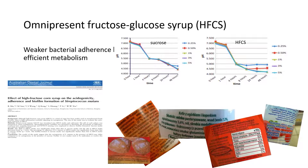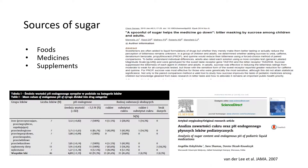They don't realize that the omnipresent fructose glucose syrup is very cariogenic because it is efficiently metabolized by bacteria. Many people forget that the sources of sugar are not only food products, but also drugs and supplements.